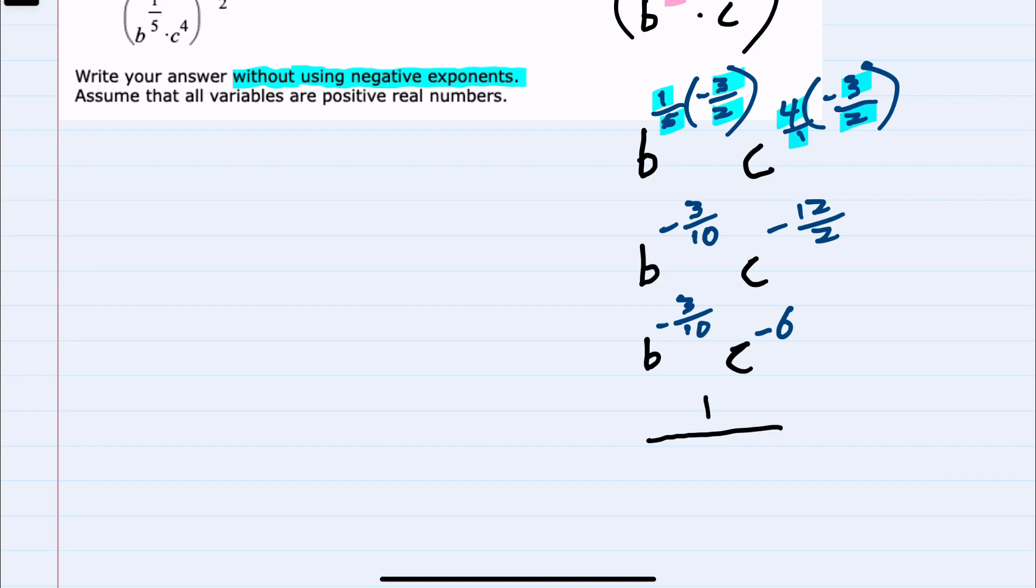And I can now write the B to the negative three tenths as B to the positive three tenths. The C to the negative six can move to the denominator as C to the positive six. We've now written it with no negative exponents.